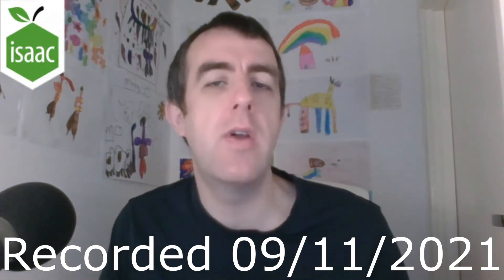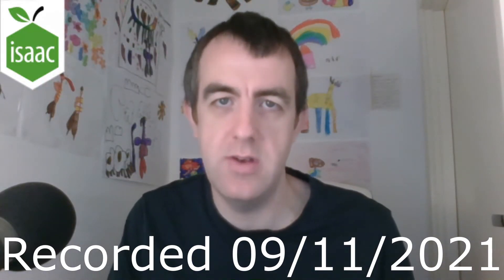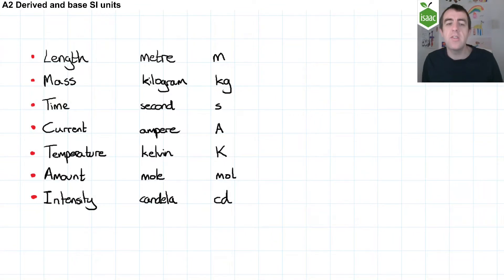This video is about derived and base SI units. In physics there are seven units that we call our base units. The unit for length is the metre, with the symbol m.